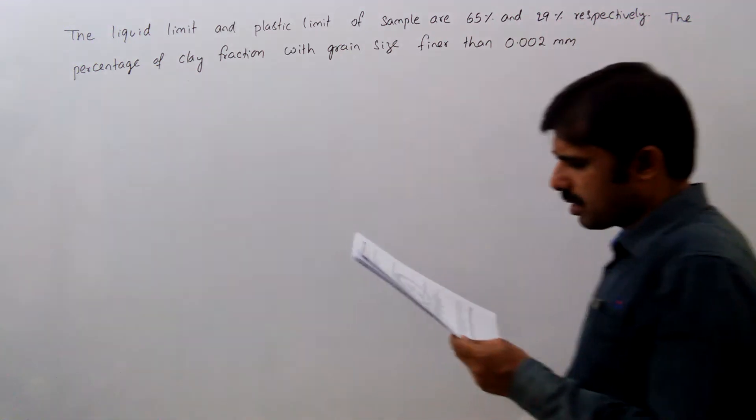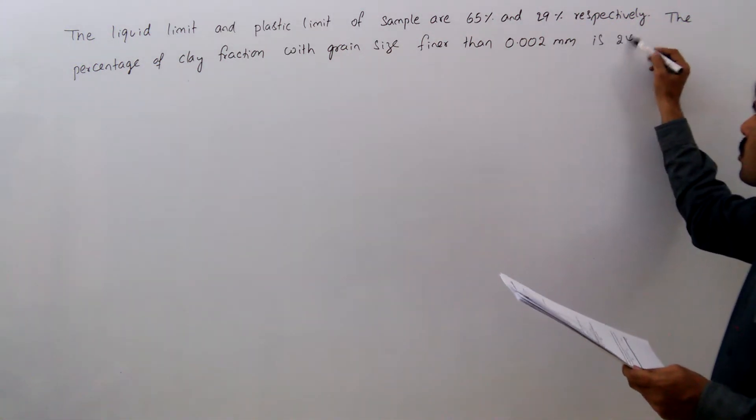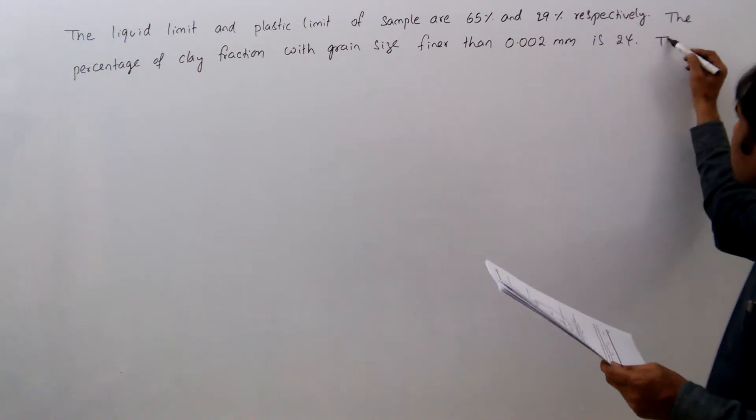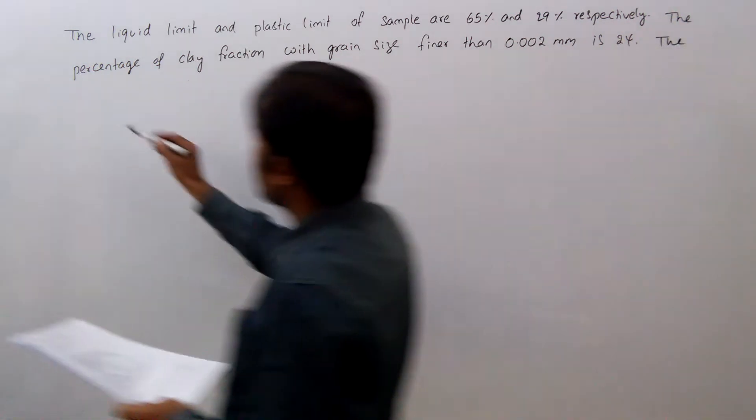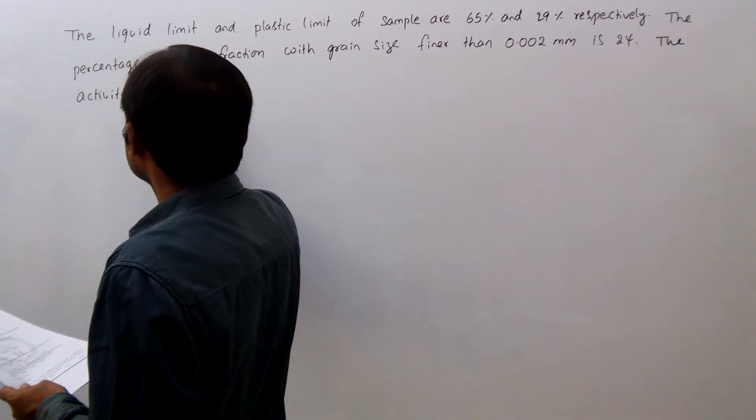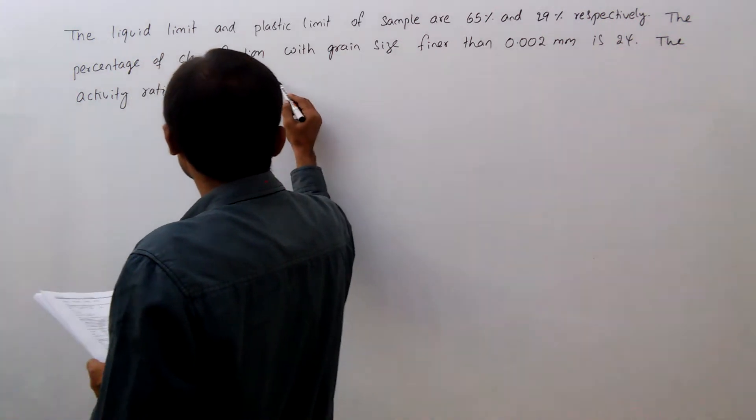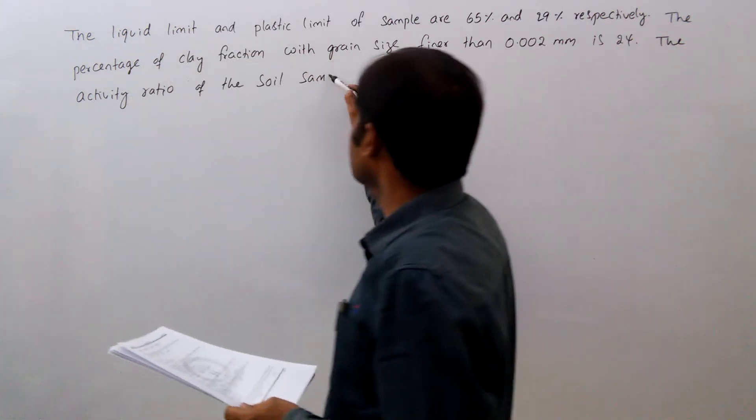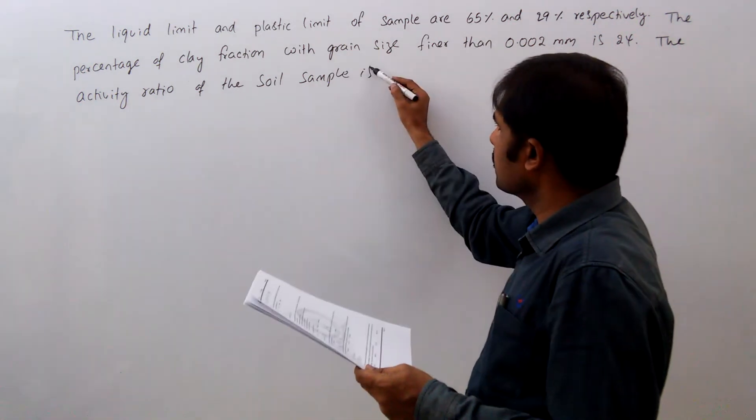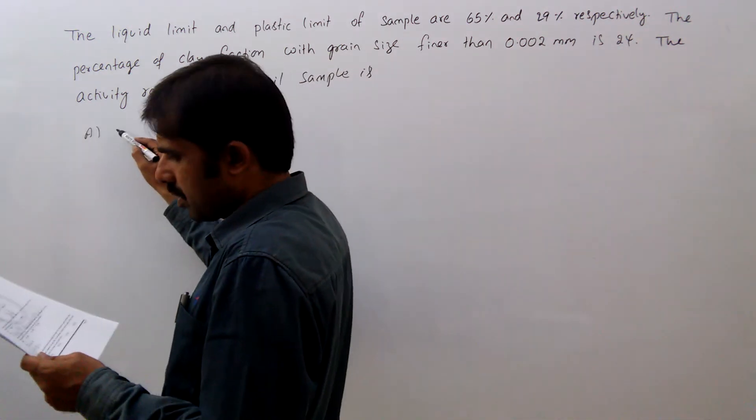...that is 2 microns, 0.002 mm is 24%. The activity ratio of the soil sample is: option a) 0.05,